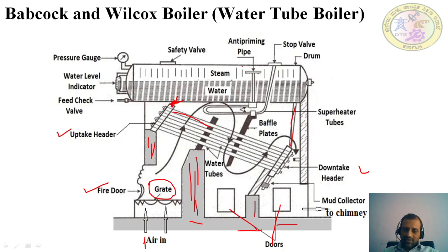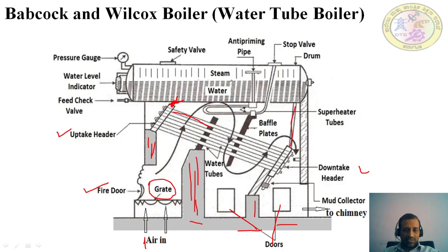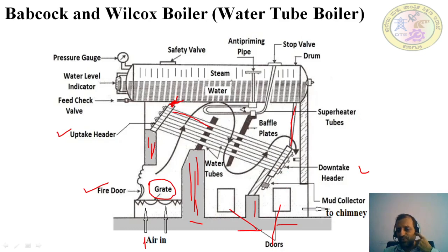If the steam contains some water particles, the anti-priming pipe separates them, and those water particles enter the superheater tubes. The superheater tubes are placed in the path of the flue gases, so heat exchange takes place again, converting the steam into superheated steam, which is used for further applications through the stop valve. After burning the fuel, ash settles at the bottom and smoke exits through the chimney to the atmosphere.